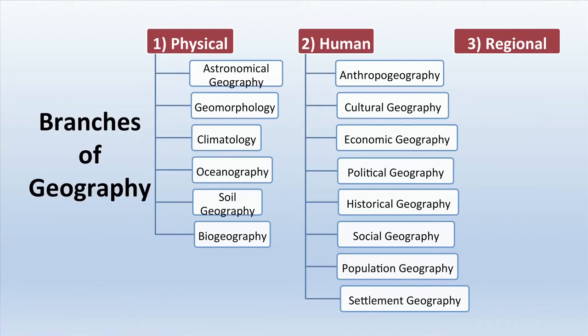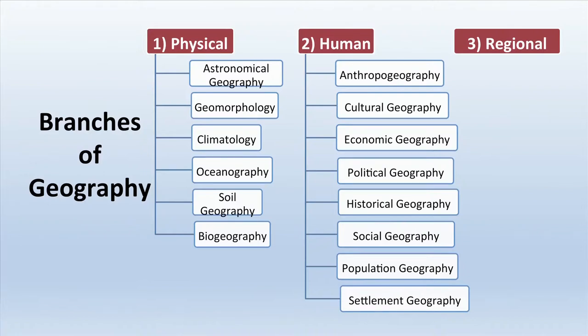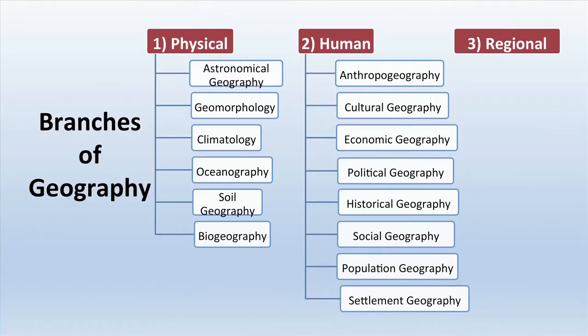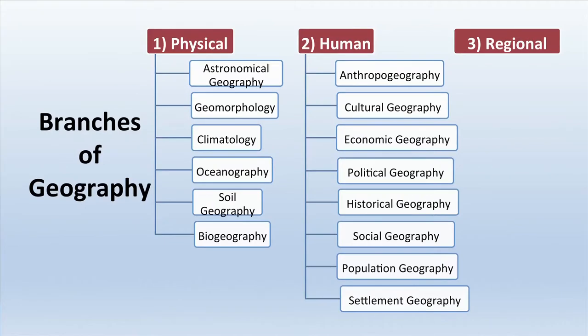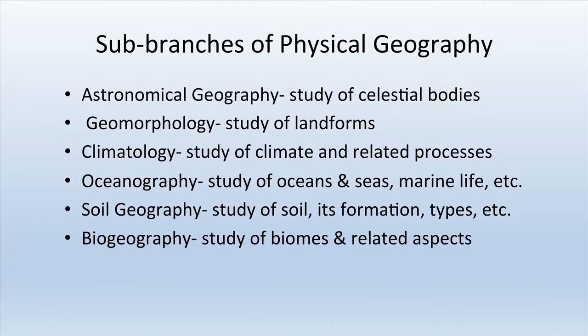Geography has three main branches. Physical geography covers all physical aspects of the earth's surface, including astronomical geography, geomorphology, climatology, oceanography, soil geography, and biogeography. Human geography includes anthropogeography, cultural geography, economic geography, political geography, historical geography, social geography, population geography, and settlement geography. The regional branch involves studying various aspects depending on defined regions.